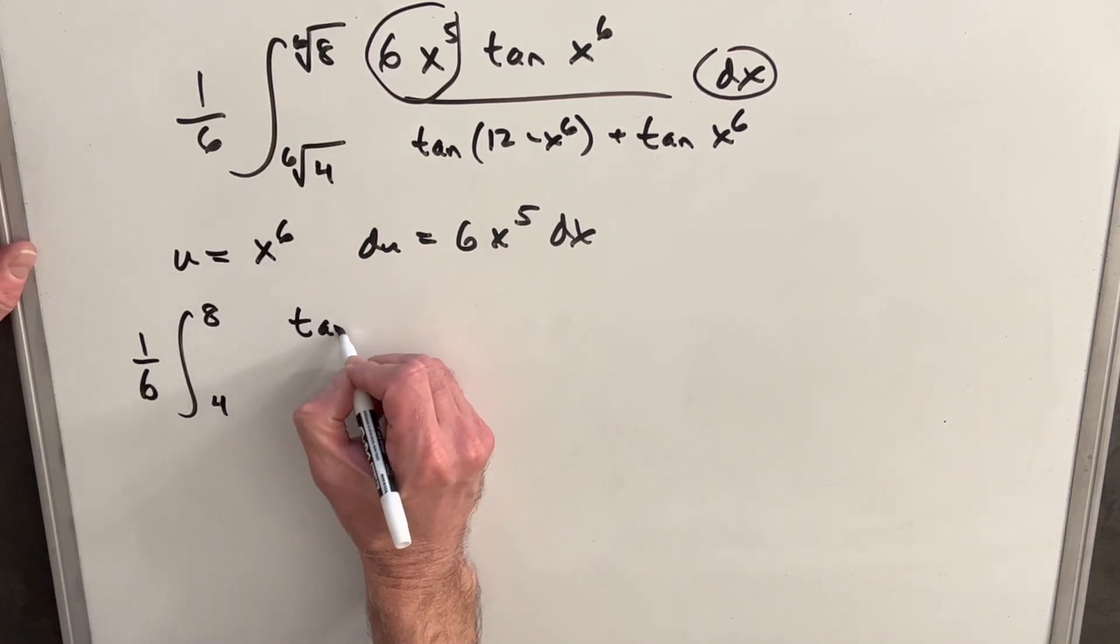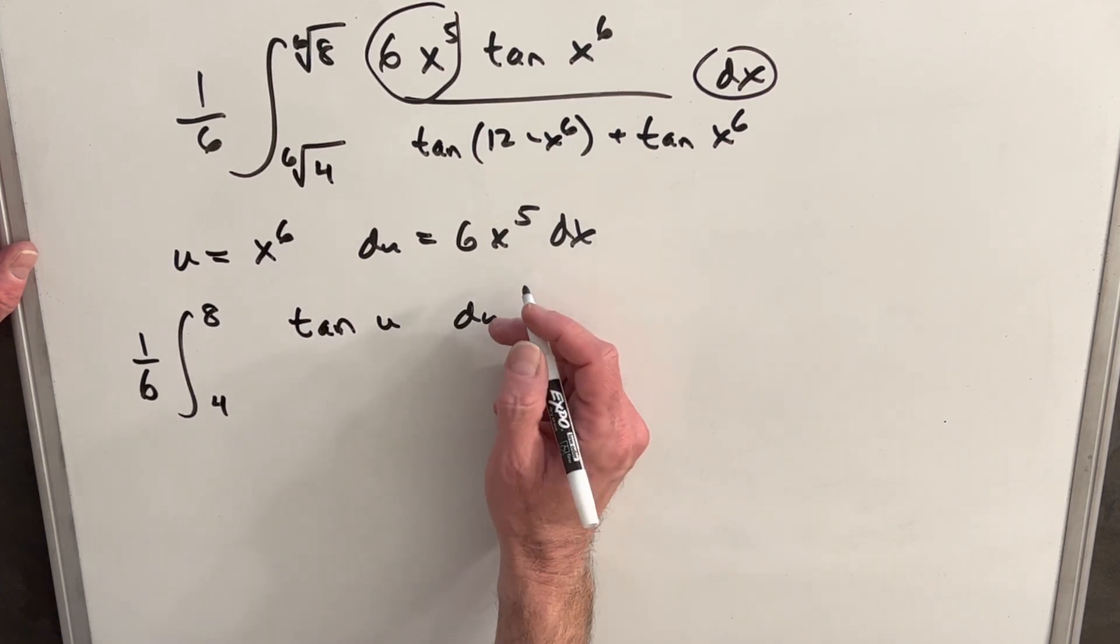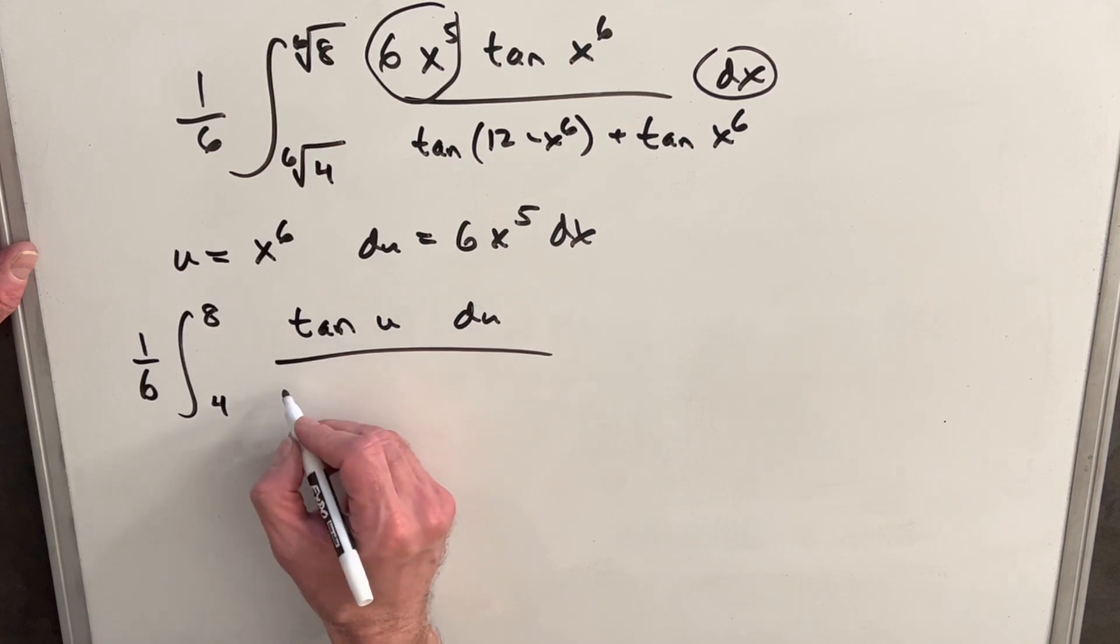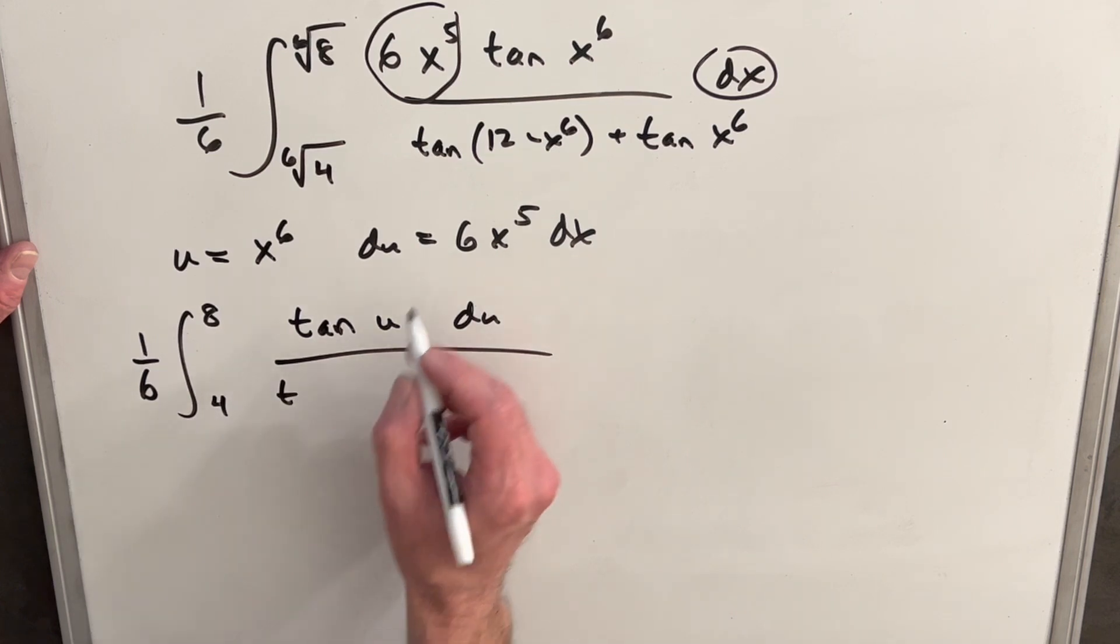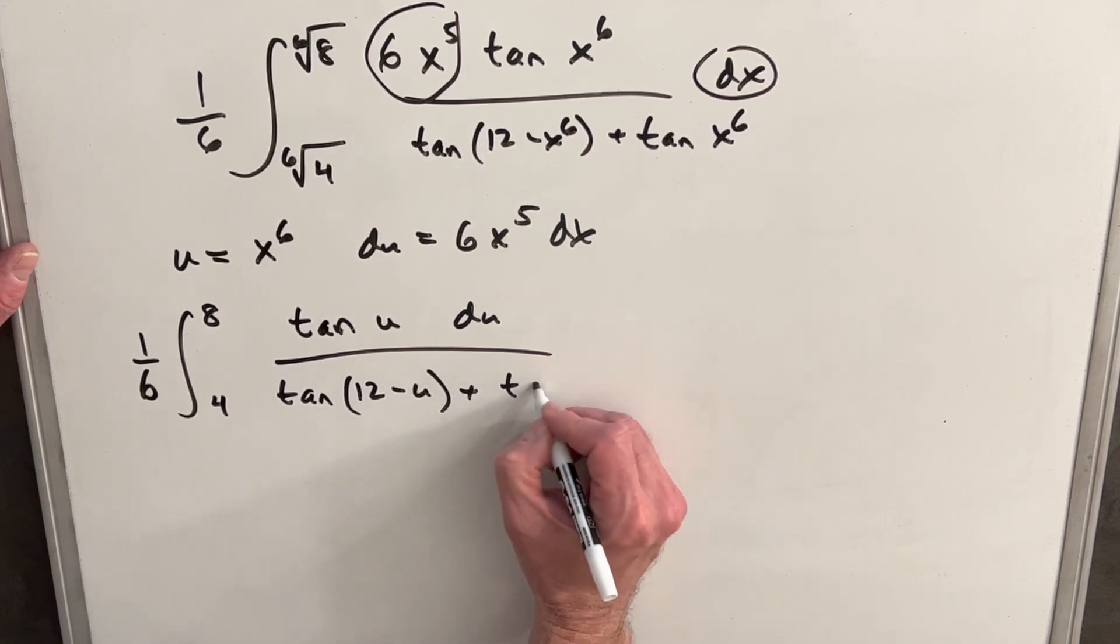Then in our numerator, we're going to have tan of u du. Okay, making that substitution. And then, let's see. So here we're going to have tan 12 minus u plus tan of u.